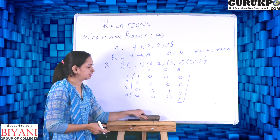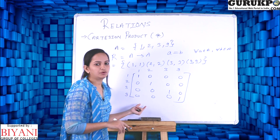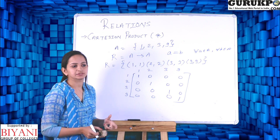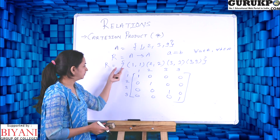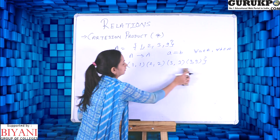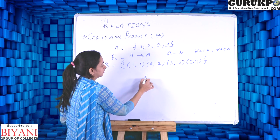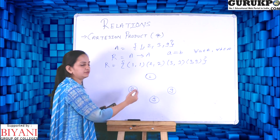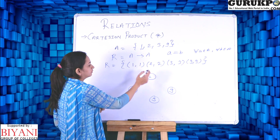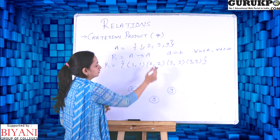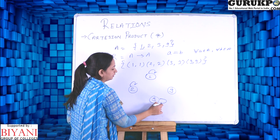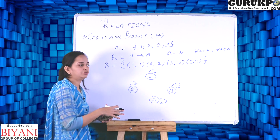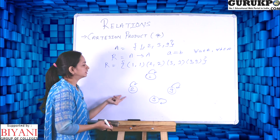We can also represent a relation with the help of a digraph — a graph with direction. In the digraph, we mention the elements of the set: 1, 2, 3, 9, and make directed arrows between elements that are related to each other. Since 1 is related to 1, 2 is related to 2, 3 is related to 3, and 9 is related to 9, each element has a self-loop. This is the digraph form of the relation.